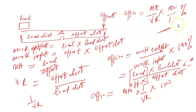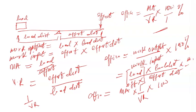With this, we've been able to define the work output, work input, mechanical advantage, velocity ratio of the system, and also the efficiency. Let's solve a simple example.